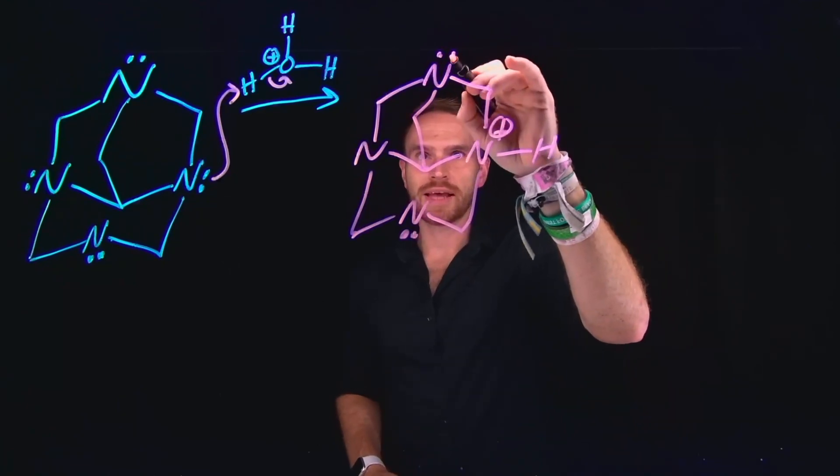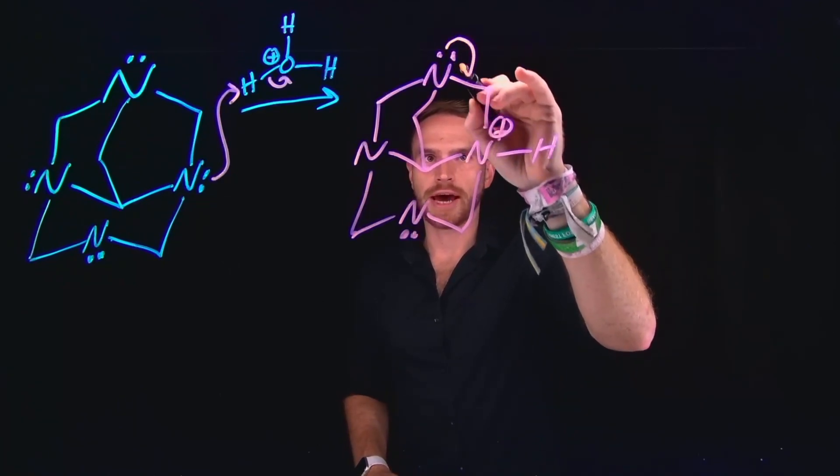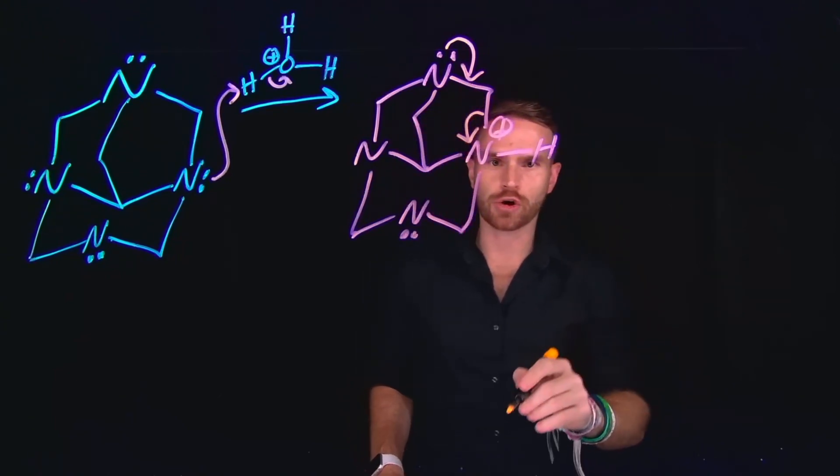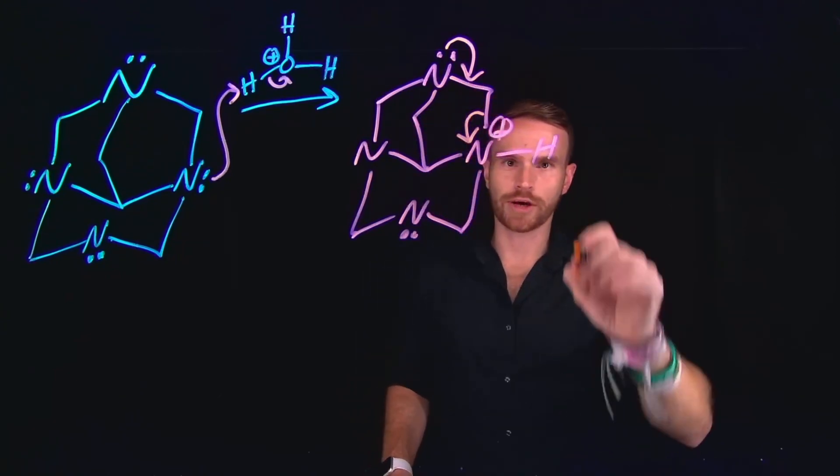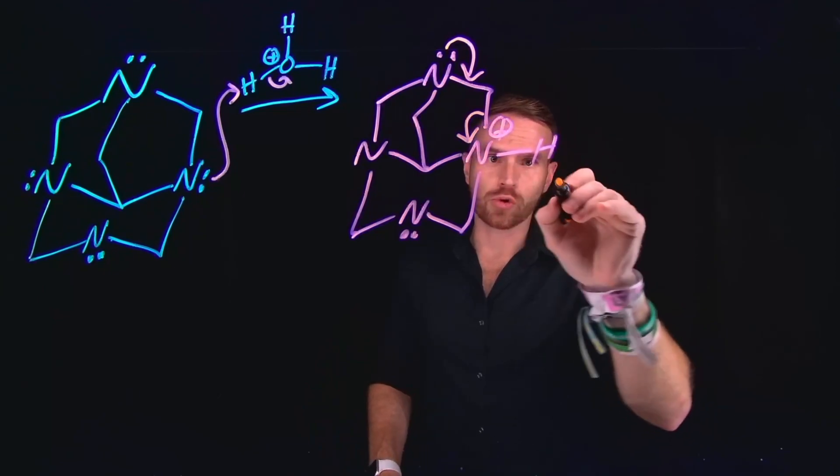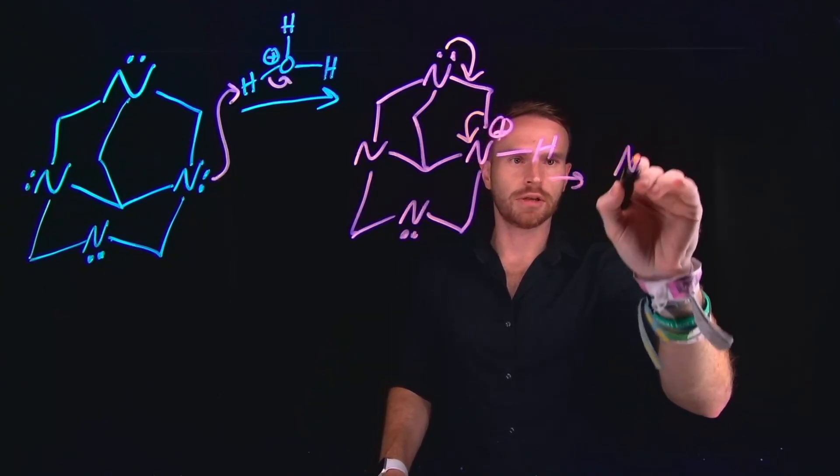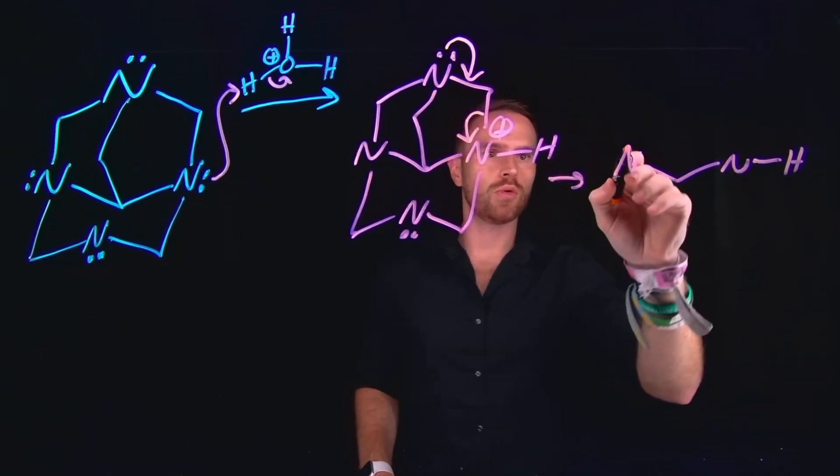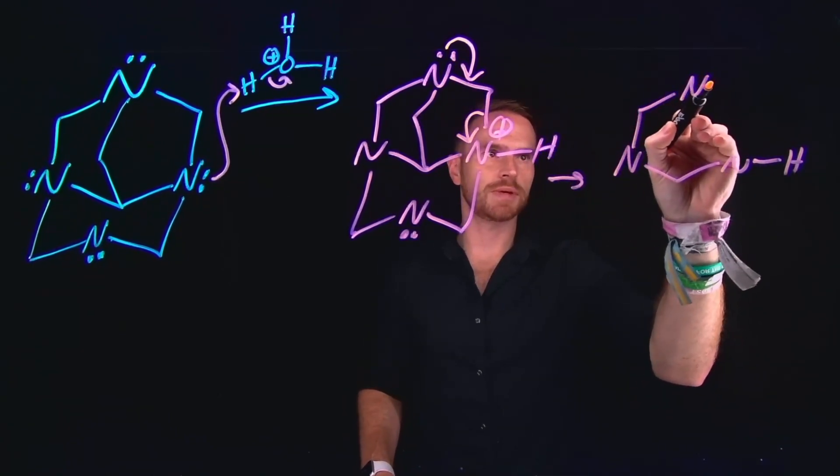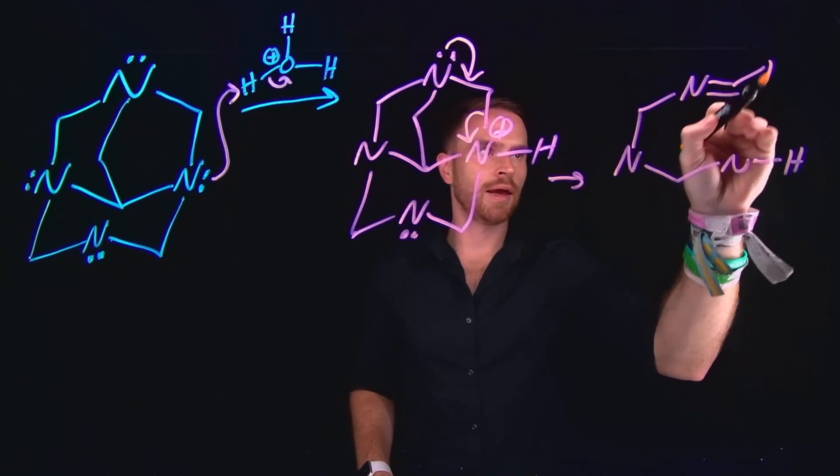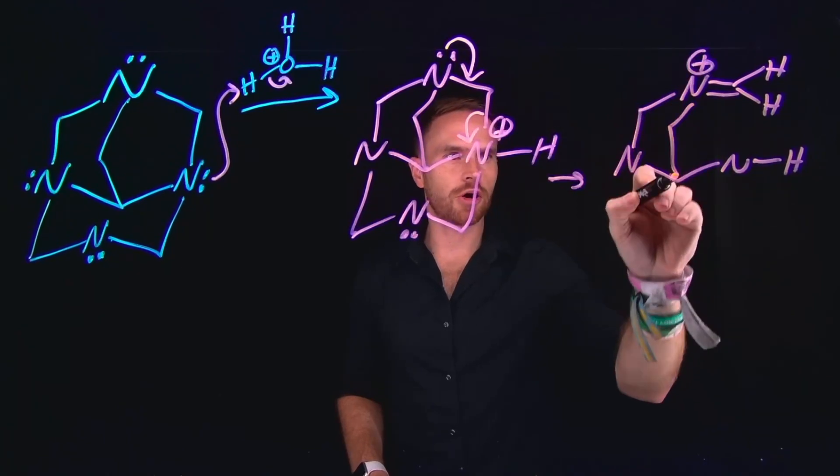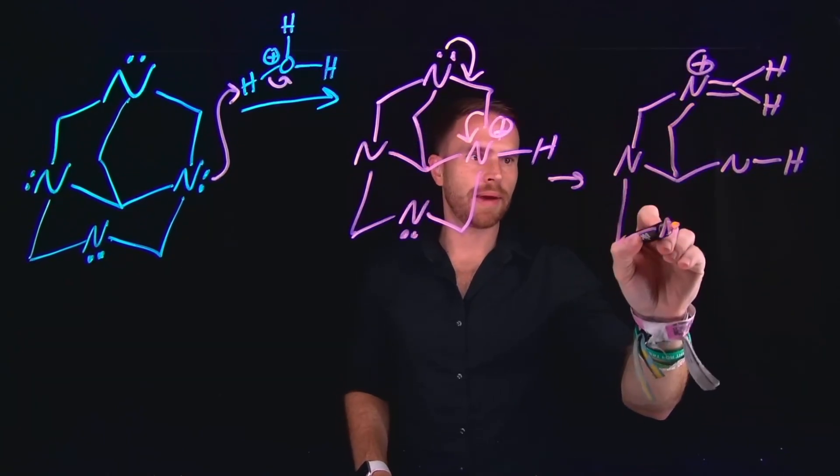From here, remember that these electrons contained on other nitrogen atoms are delocalized and can allow us to move electrons along this cyclic ring. This is going to regenerate a neutral nitrogen at this position. However, importantly, it is also going to generate a new positively charged nitrogen species, which has created this new double bond. So here, the nitrogen will be positively charged, and everything else will remain the same.